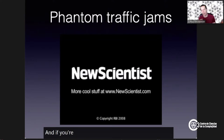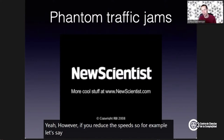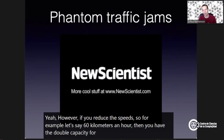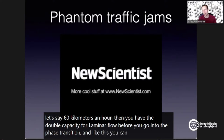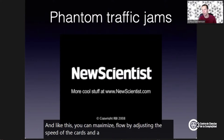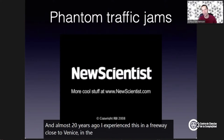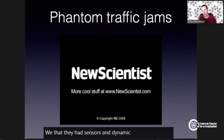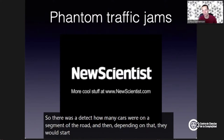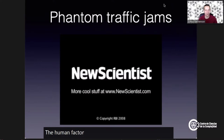If you have more vehicles than the safe capacity, you get a traffic jam. However, if you reduce speeds — say to 60 km/h — you double the capacity before the phase transition. You can maximize flow by adjusting the speed of cars. About 20 years ago, a freeway near Venice had sensors and dynamic speed limits that would detect vehicle density on a road segment and change the speed limit accordingly. The problem was that nobody respected the speed limit — the human factor was problematic.